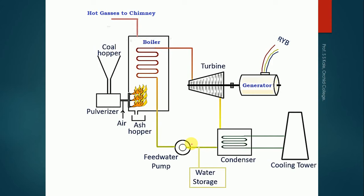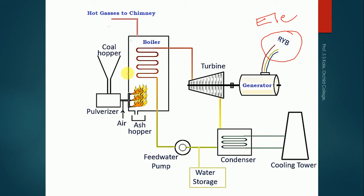In the thermal power plant, the aim is to generate electrical energy, which is available from the generator. Components like the boiler, turbine, condenser, and feed water pump are used to generate mechanical energy, which is then given to the generator to produce electrical energy. This is all about the working of a thermal power plant.